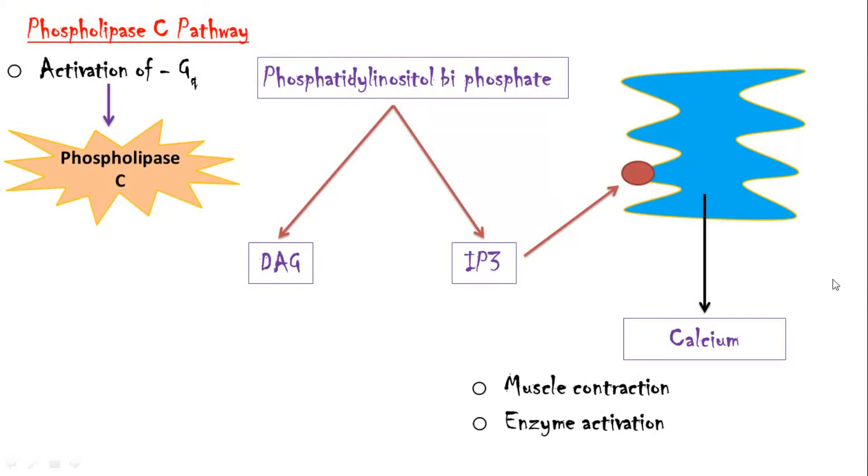DAG causes increase in protein kinase C levels within the cell. PKC causes phosphorylation of certain enzymes and proteins.